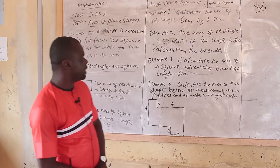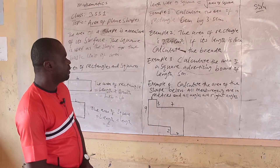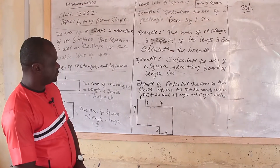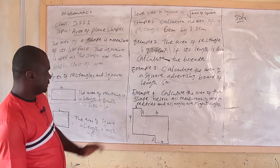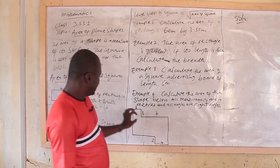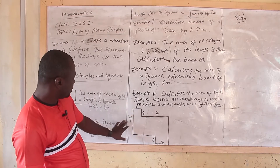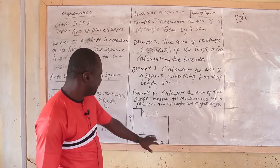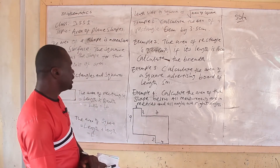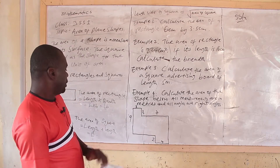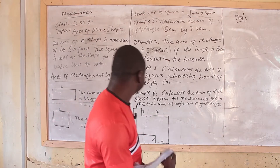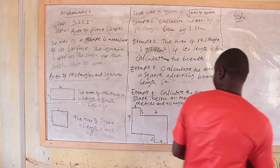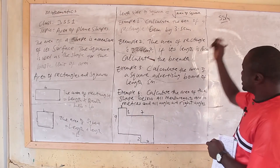For example four, the question says: calculate the area of the shape below. All measurements are in meters and all angles are right angles. These numbers we see here — 3, 3, 7, 9, 2, 4 — are all measuring in meters. So if we are going to work out the solution, we are going to draw the diagram and do a sketch of it.